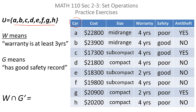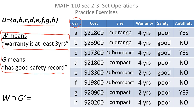We have two statements. Statement W is that the warranty is at least three years. Statement G is that it has a good safety record. They're asking us to find the set W intersected with G complement.